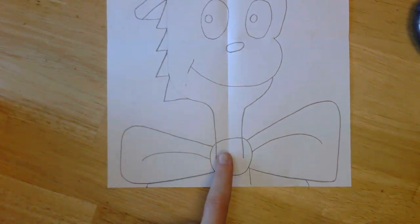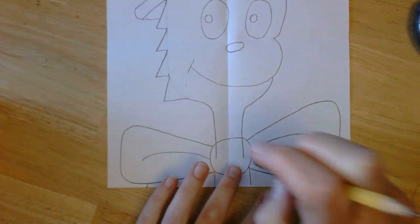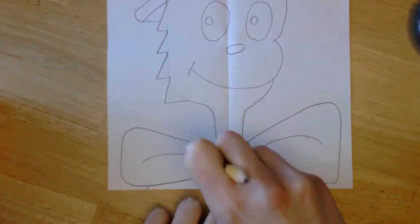Now, if you overdrew like I did, you can go ahead and erase those inside parts on his bow.